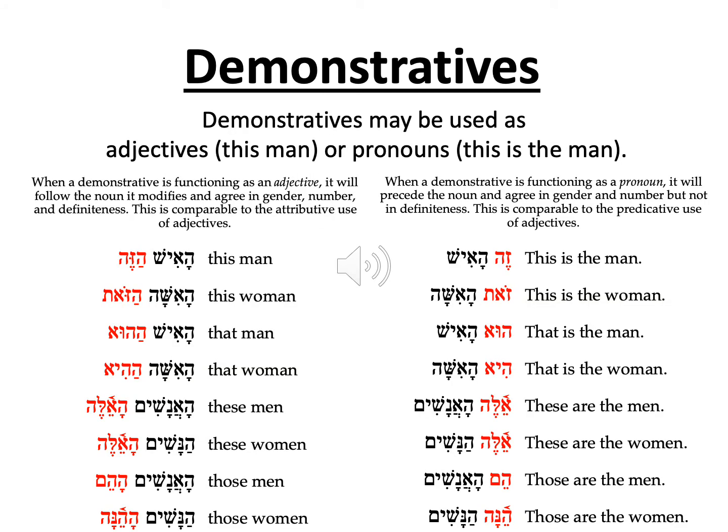However, demonstratives as in English can be used as pronouns or as adjectives. 'This is the man' uses 'this' as a subject and is therefore a pronoun, with 'this' standing in place of 'man.' However, 'this man' uses 'this' to describe the word 'man' and is an adjective — which man? This man. The word looks the same in Hebrew as in English, so usage will tell you how the word is being used.